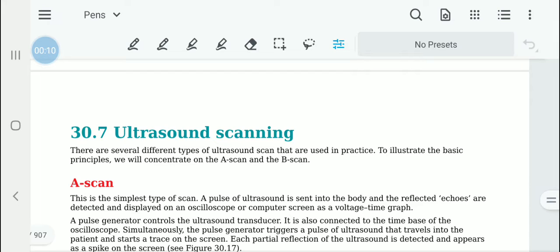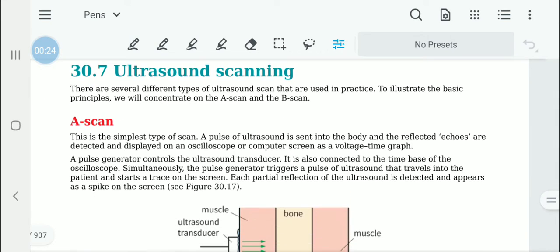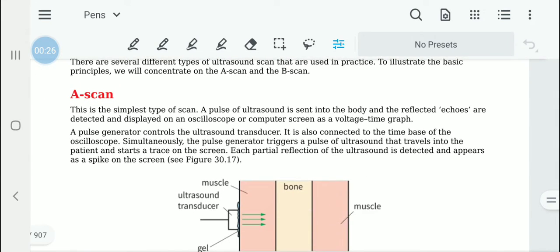To talk about the basic principles of ultrasound scanning, we are going to consider two of the many different types of ultrasound scan that are being used in medicine. The first one is A scan and the other one that we are going to discuss is the B scan.